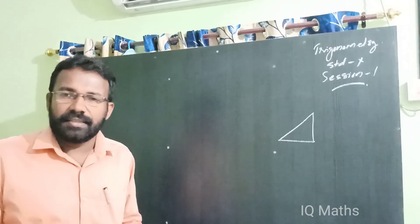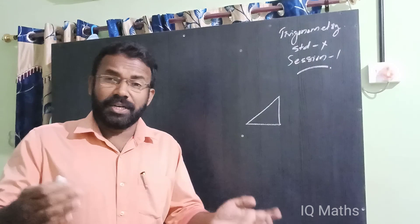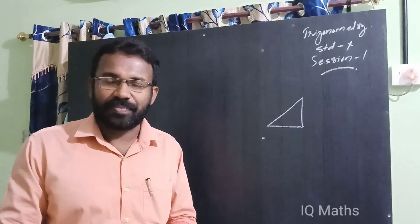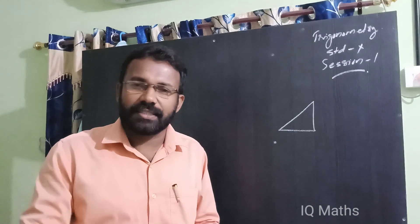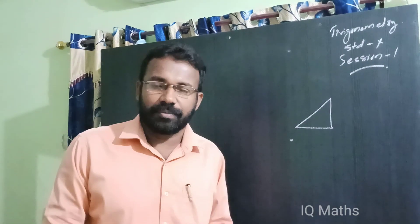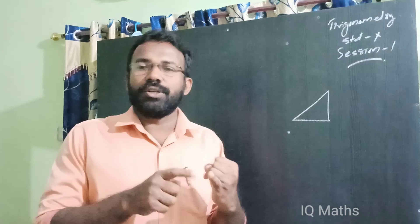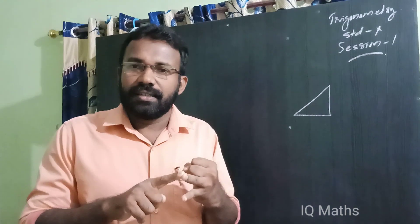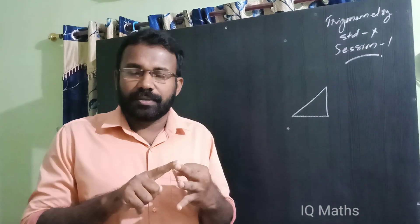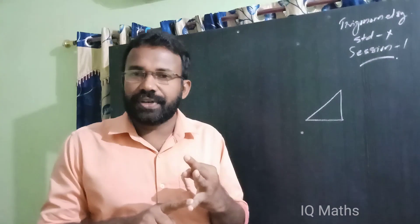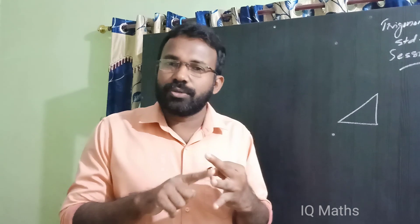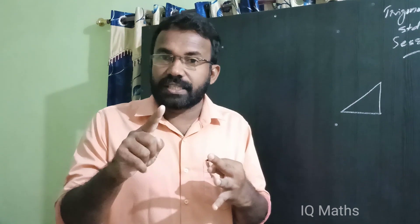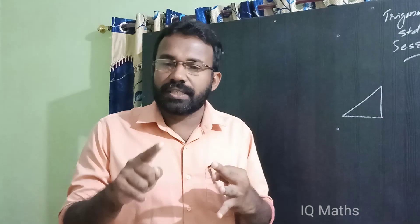What are the types of triangles? According to sides, there are three types. What is a scalene triangle? A triangle with three different sides. What is an isosceles triangle? Two sides are equal. What is an equilateral triangle? Three sides are equal. According to this, equilateral triangles are also isosceles.